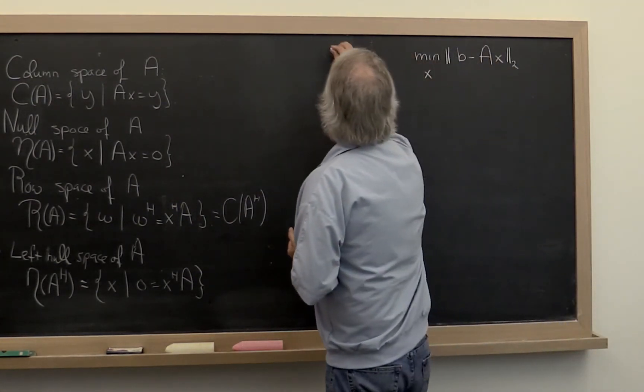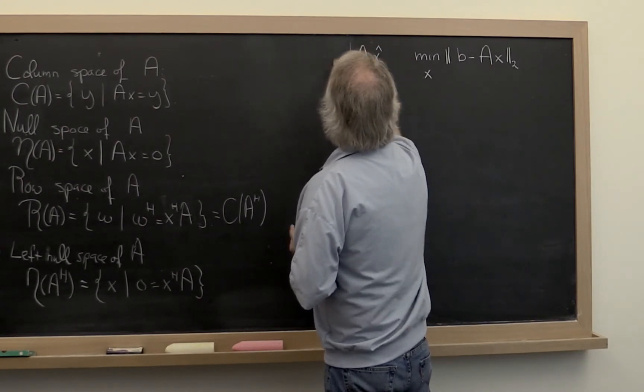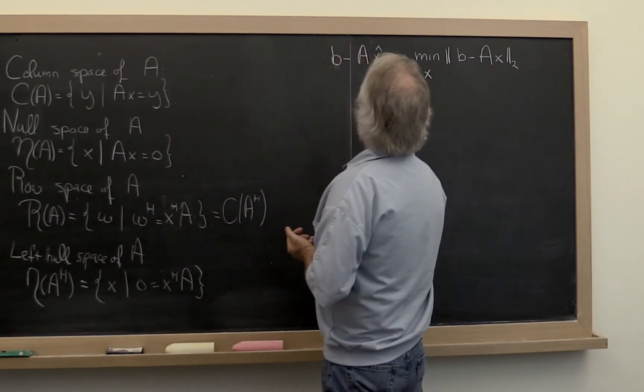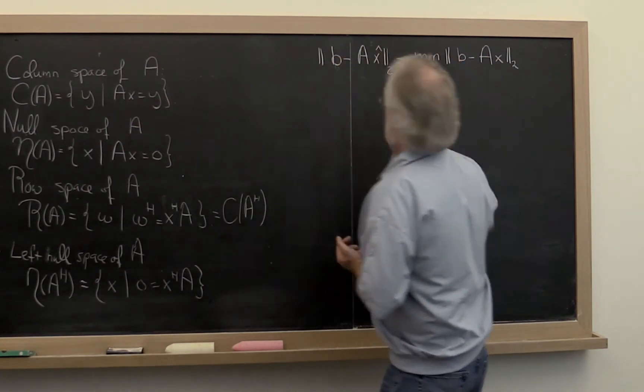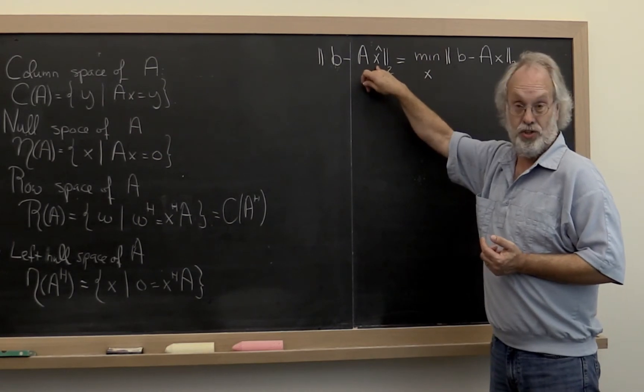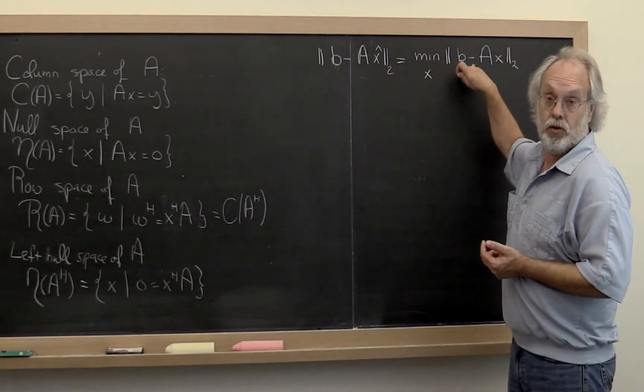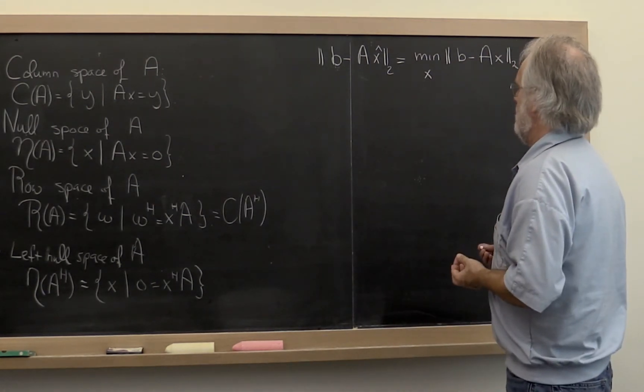What that really means is that we want to find x-hat such that b minus a times x-hat in 2-norm is equal to that. We're interested in the solution. We're not interested all that much in the minimum here. Now let's have a look at what that means.